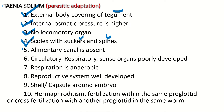The alimentary canal is absent in this organism because they do not need a digestive system. They can get readily available, already-digested food from the host through their general body surface. They obtain ready-made food material from the host, so they do not have an alimentary canal or digestive system.